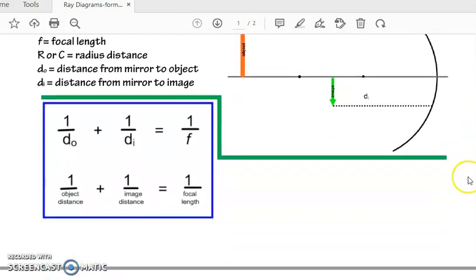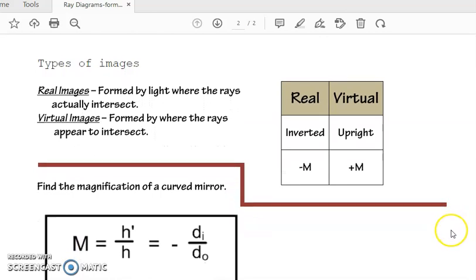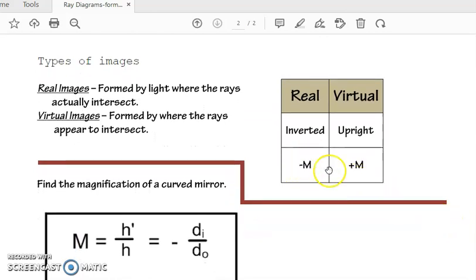The last video that I did, I forgot to mention something. When you go and figure out your magnification using this formula right here, M equals negative Di over Do, you'll get a value to see if they're negative or positive. If we get a positive 2, that means the magnification made the image twice as large as what it was. That means it's going to be upright.